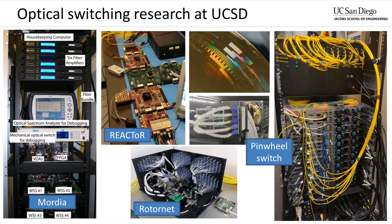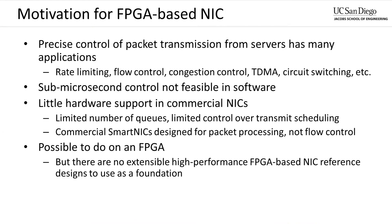One of the biggest roadblocks is the ability to precisely control the flow of data into the network. The ability to precisely control packet transmission from servers has many applications. However, sub-microsecond control is not feasible in software. In order to get that level of precision, it must be implemented in hardware. Unfortunately, there is very little support on existing commercial NICs for this type of feature. Commercial NICs generally provide a limited number of queues and only provide limited control over the rate at which those queues can drain. Commercial smart NICs can open up some additional possibilities, but in many cases smart NICs have architectural limitations that preclude this type of control.